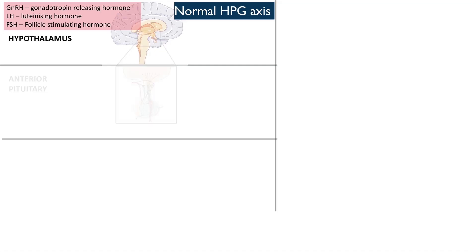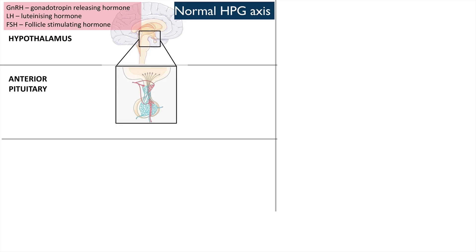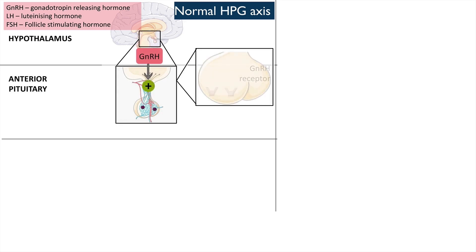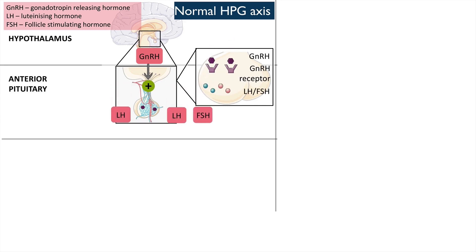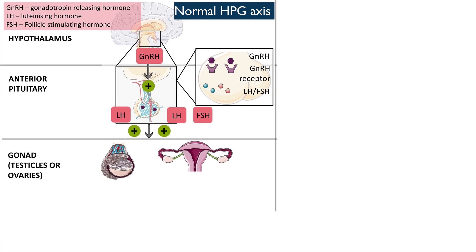The hypothalamus produces gonadotropin-releasing hormone, or GnRH, which stimulates the anterior pituitary to produce luteinizing hormone and follicle-stimulating hormone. This then stimulates the development of the follicles in the gonads.